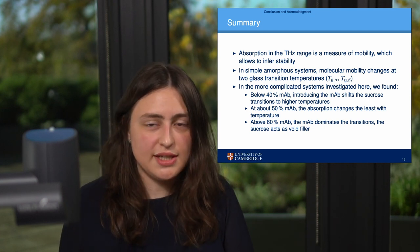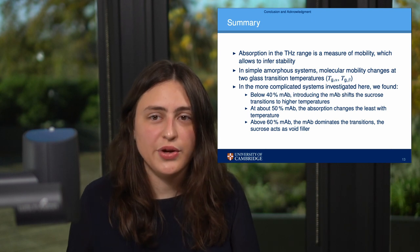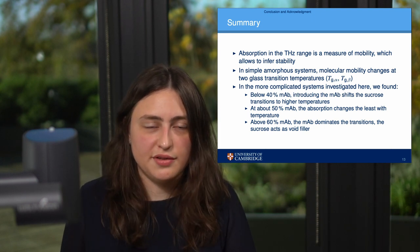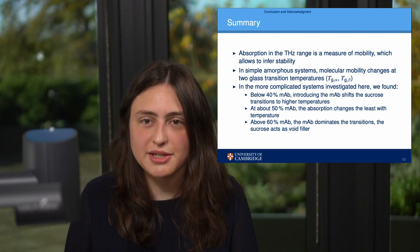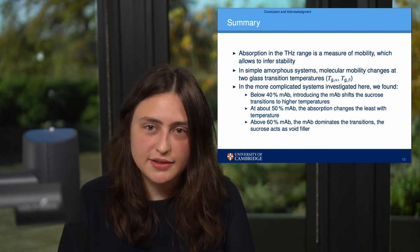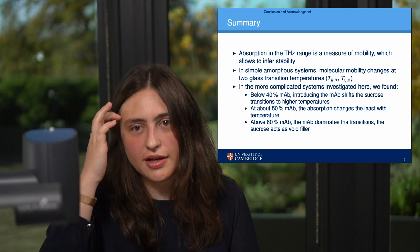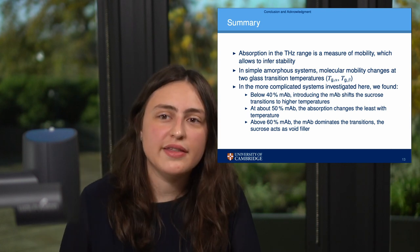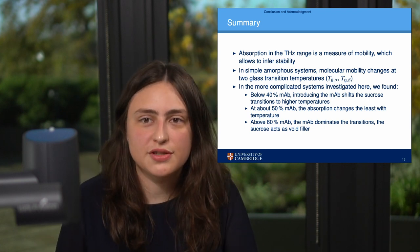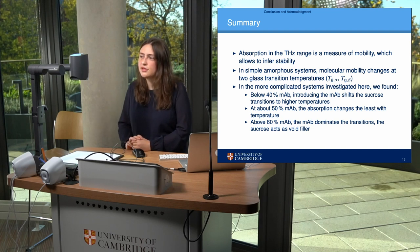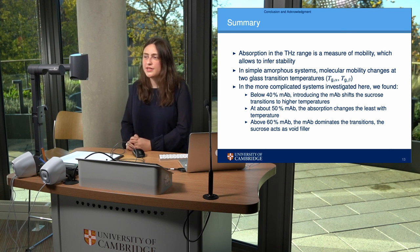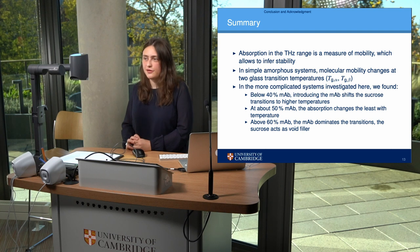At about 50% antibody and 50% sucrose, we have the least absorption change with temperature, and we think that relates to an increase in stability. But as we increase the antibody content even further, we no longer see that shape with two transition temperatures, because our spectra and the absorption change with temperature is clearly dominated by the antibody. We see the plateau, we see the jamming, and the sucrose merely acts as a void filler.